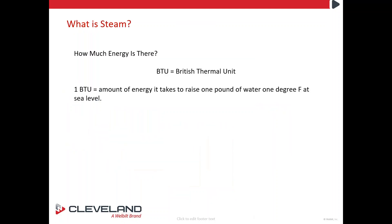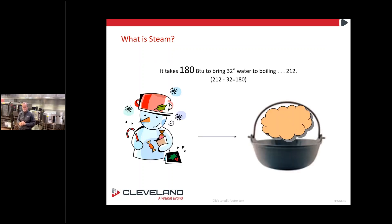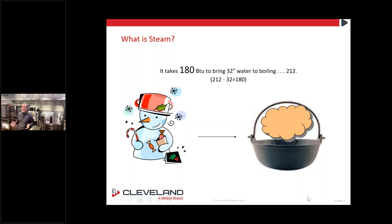It takes one BTU of steam energy to raise one pound of water one degree Fahrenheit at sea level — that's what a BTU is. It takes 180 BTUs of energy to bring water from a freezing point of 32 degrees Fahrenheit (0°C) up to a boil at 212 degrees Fahrenheit (100°C).